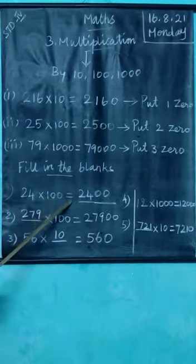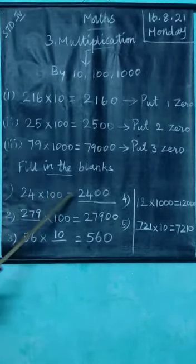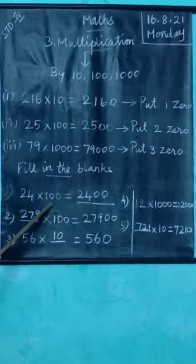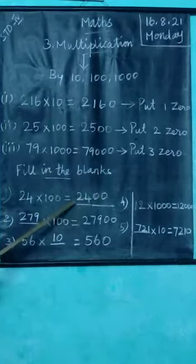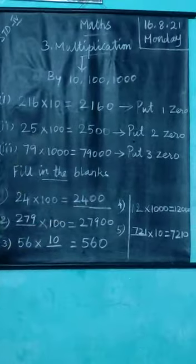24 into 100. What is the answer? We write the number 24 and we put two zeros to the right. So the answer is 2400.